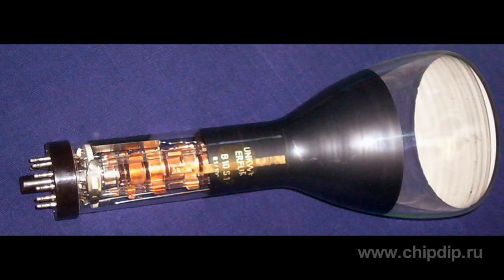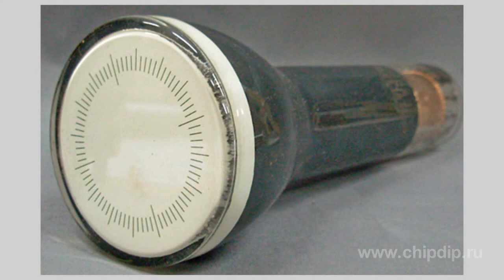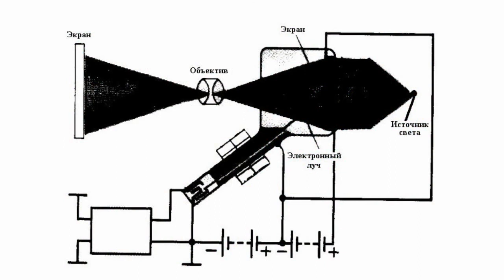Structurally, a dark trace tube is a cathode ray tube, but instead of a luminescent screen, it has a screen consisting of thin sodium and potassium chloride. The bombardment with the electron beam makes the screen darken for a while.